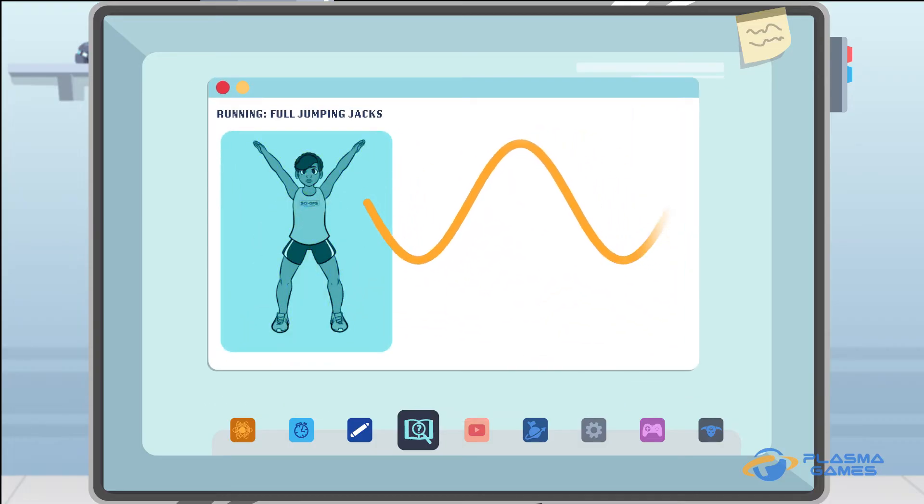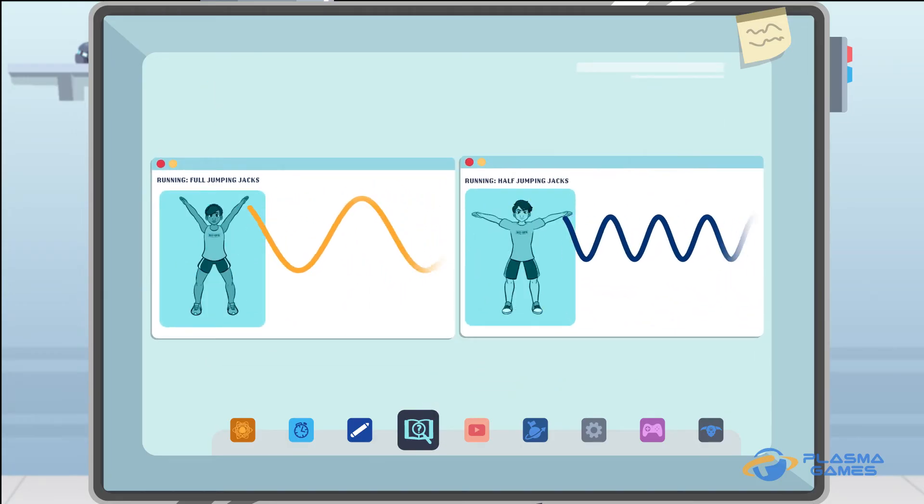With jumping jacks, we can use the size of the movement of your arms to represent amplitude. Smaller amplitudes, like half jumping jacks, take less energy to generate than larger amplitudes, like full jumping jacks.